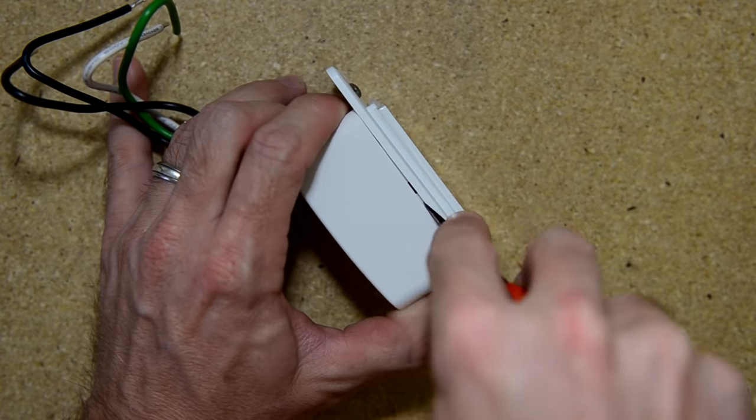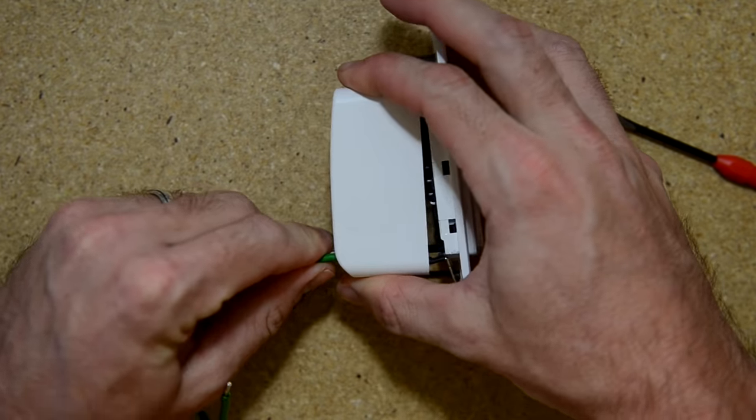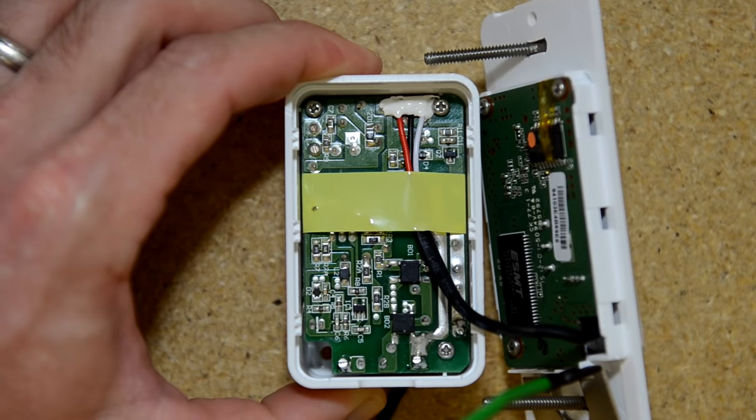Start by prying the sucker open with the flattest flathead you can find. Once you get to one side, do the same thing for the other. Push the wires through as you go.